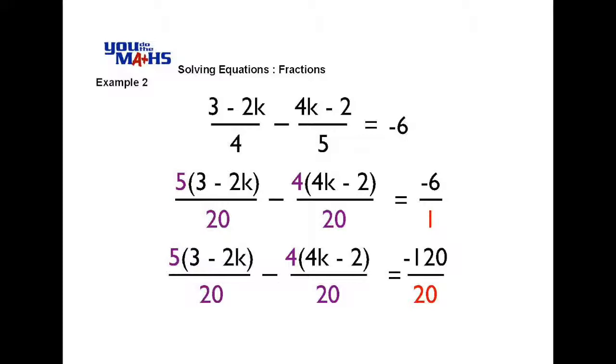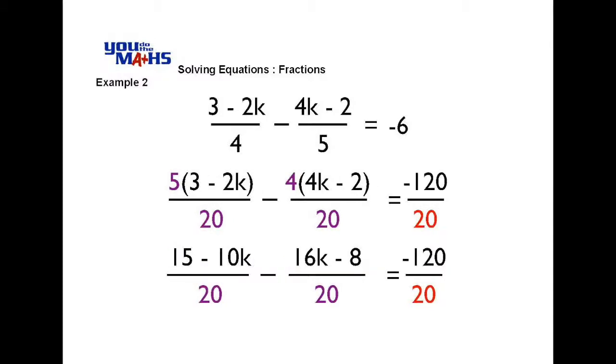Now to solve the problem, what we need to do is expand the brackets. The left hand side becomes 15 minus 10k when we multiply by 5, and the second fraction becomes 16k minus 8 when we multiply by 4.